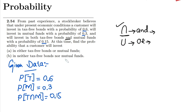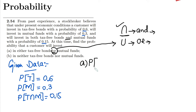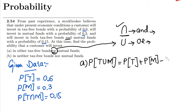For part A, we need to find the probability of investing in either tax-free bonds or mutual funds — that is the OR condition — so we use the union. The formula is: probability of T union M equals probability of T plus probability of M minus probability of T intersection M.